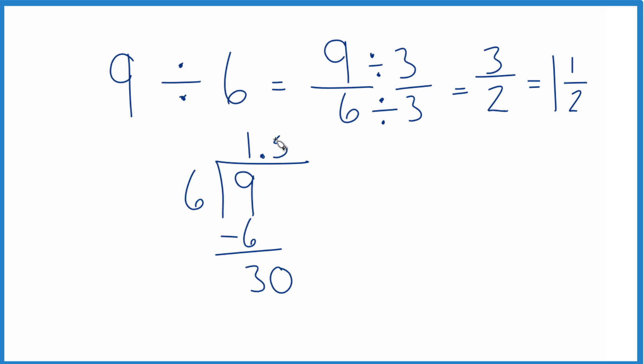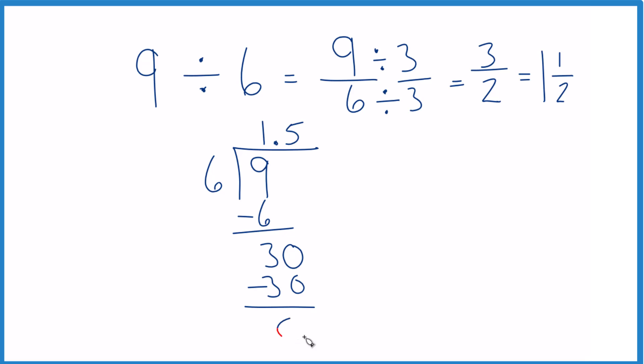Now 5 times 6, that gives us 30. We subtract, no remainder. So we end up getting the same thing, 1.5, which is the same as 1 1/2.